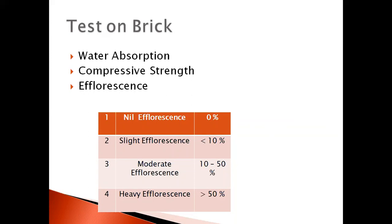After the efflorescence test, check whether the brick has gray or white patches. Classification: if the exposed area has no patches — nil efflorescence. If less than 10% of the exposed area has patches — slight efflorescence. If 10 to 50% of the exposed area has patches — moderate efflorescence. If greater than 50% — heavy efflorescence. That's all about bricks — check the dimension of a brick and let me know. Thank you.